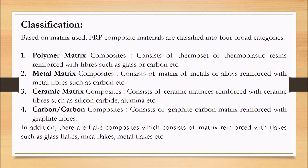Fiber reinforced polymers are categorized into four categories based on the matrix material used. The first category is polymer matrix composites — it consists of thermoset or thermoplastic resins reinforced with fibers such as glass or carbon.